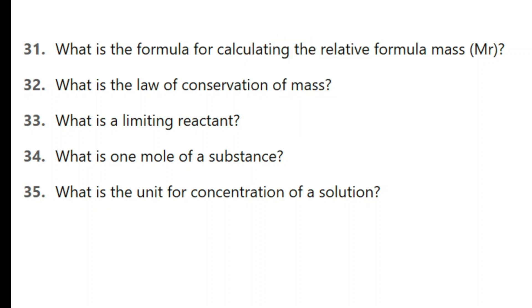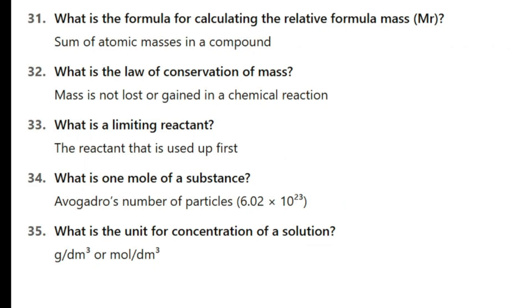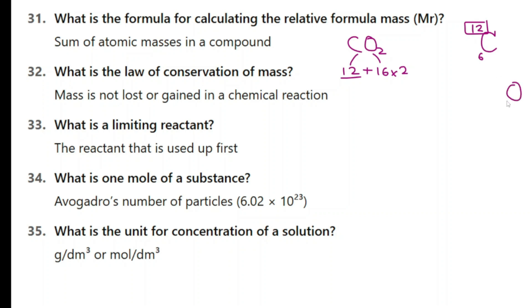Here are the next 5 questions. Here are the answers. What is the formula for calculating the relative formula mass? It is the sum of atomic masses in a compound. For example, carbon dioxide: carbon has relative atomic mass 12, oxygen is 16 but you have two of them so 16 is doubled. So 12 plus 32 gives you 44 — the formula mass of carbon dioxide is 44. For water: hydrogen is 1 times 2, plus oxygen is 16, giving 18.